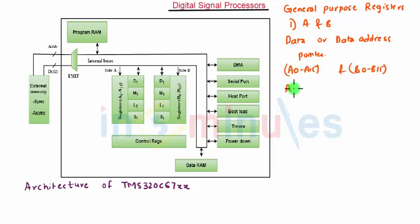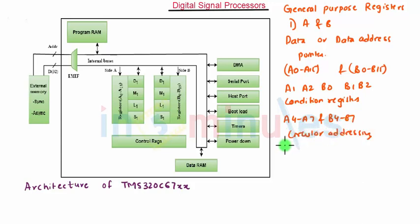The set of registers A1, A2, B0 to B2 are used as condition registers. The registers A4 to A7 and B4 to B7 are used for circular addressing. These registers also provide 32 bit and 40 bit fixed point data.